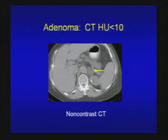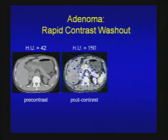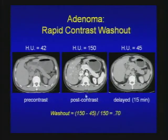Here are some examples. Incidental left adrenal mass on non-contrast CT less than 10 Hounsfield units — diagnostic for adrenal adenoma. Another case: right adrenal mass at 42 Hounsfield units on pre-contrast, so it does not fulfill criteria on non-con. With contrast at portal venous phase it's 150 Hounsfield units; at 15 minutes delay it's 45 Hounsfield units. The washout is 70% — rapid contrast washout, consistent with adrenal adenoma. The rapid washout rule is especially useful for diagnosing lipid-poor adenoma.